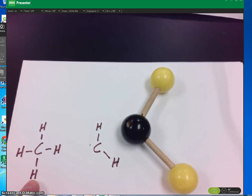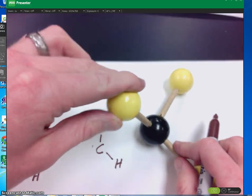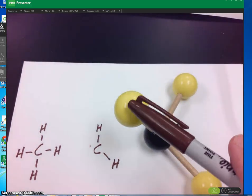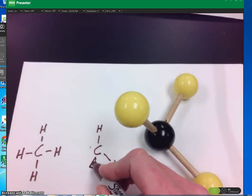Now this hydrogen, that's going to be projecting out towards you. So the way that we show that this is projecting out towards you is by making a wedge.